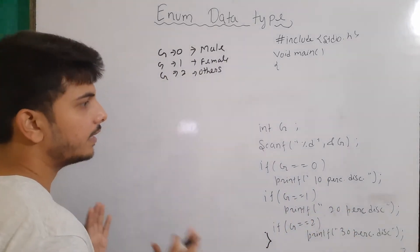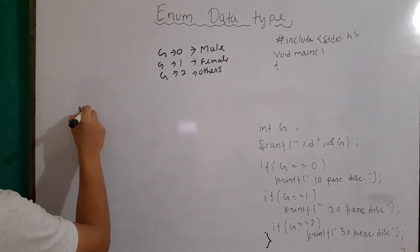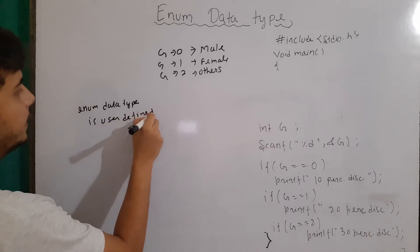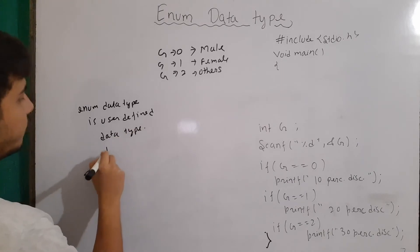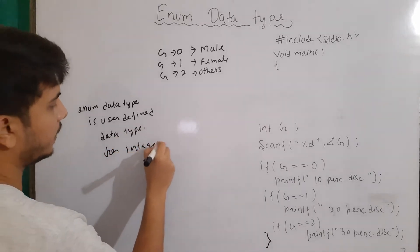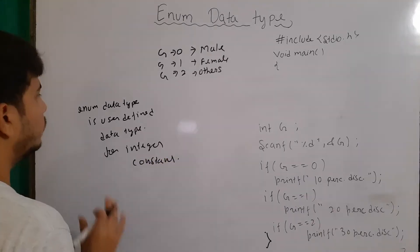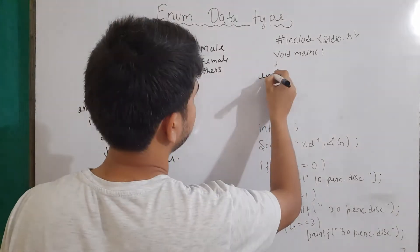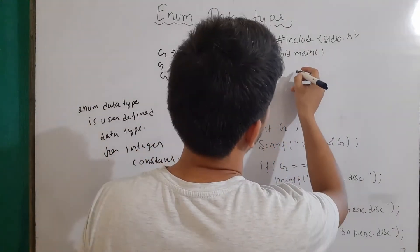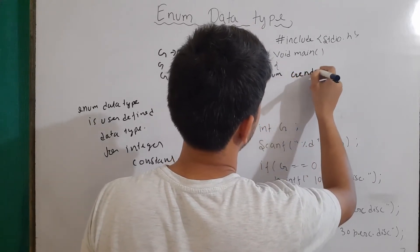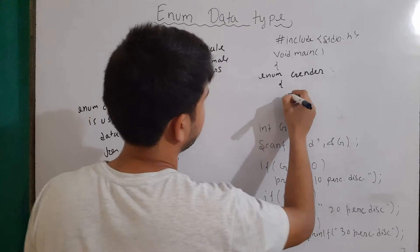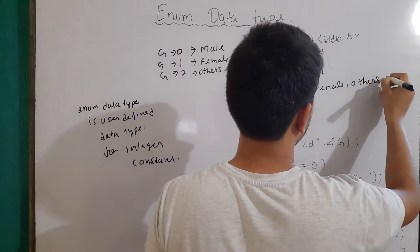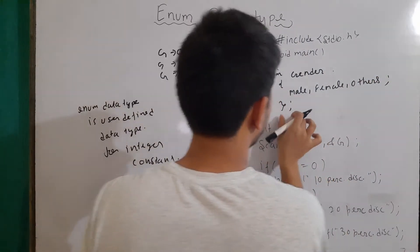What are enums? Enums are basically integer constants. Enum, or enum data type, is a user-defined data type which is used for integer constants. Note that the declaration of an enum is similar to the declaration of a structure. So I'll write here: enum, then the name of our enum data type is gender. Then the values: male, female, and others. And that will be all, with a semicolon at the end.